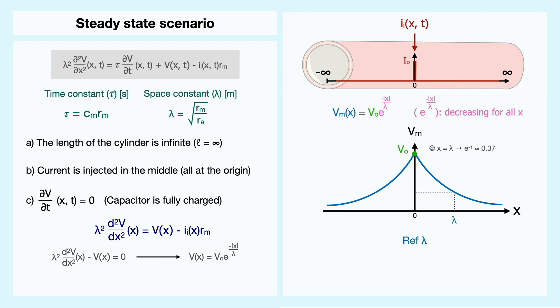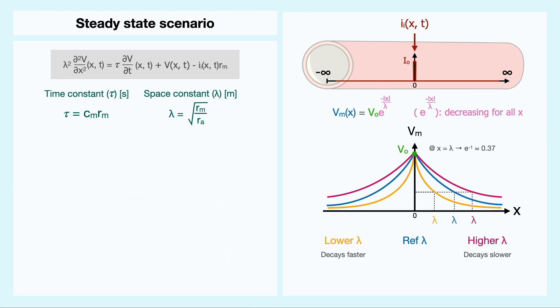To see its impact more graphically, let's consider the blue curve as our reference lambda. If we were to consider a smaller lambda, you can see that the curve becomes smaller and means that the voltage has decayed faster than the reference value. On the other hand, a higher value of lambda shows that the signal decays slower from the site of injection, which means that the membrane potential can be impacted further.